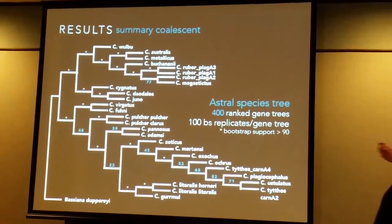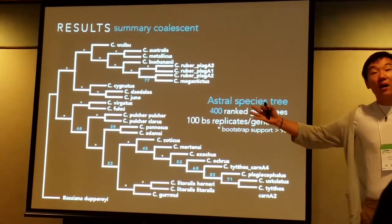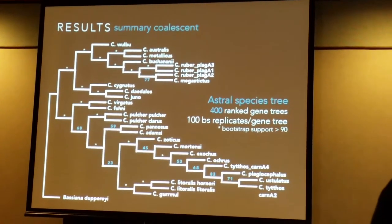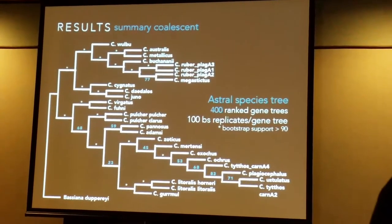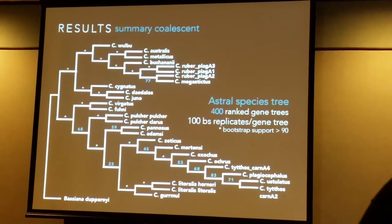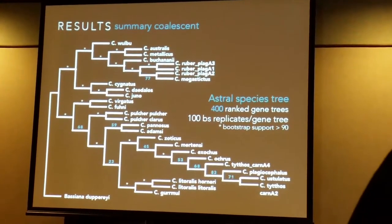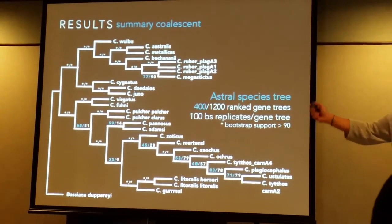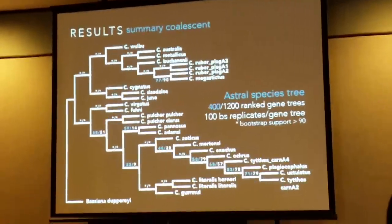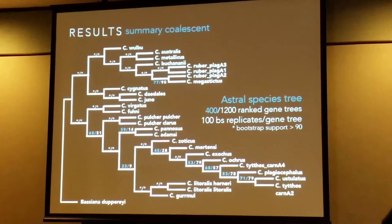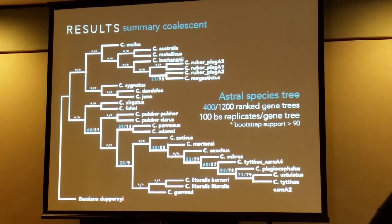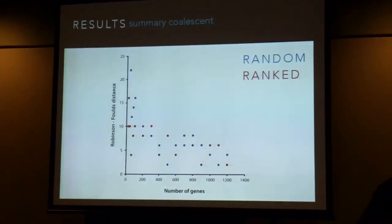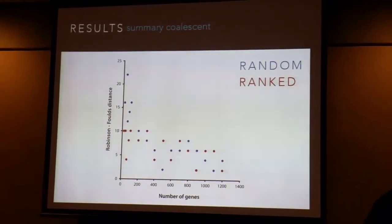What I did is rank all those loci based on their consistency value, and then conducted an ASTRAL species tree — a summary coalescent method — on subsets of those datasets with an increasing number of loci but decreasing information content. What you can see here is that many of those nodes that were hard to resolve in the concatenation method are also hard to resolve in the summary coalescent method. This is based on 400 of those ranked gene trees with 100 bootstrap replicates per gene tree. If you add 1,200 gene trees — almost the complete dataset — adding non-informative loci with inconsistent gene tree estimates shows that nodes consistently resolved remain consistently resolved, and those that were unresolved remain unresolved.